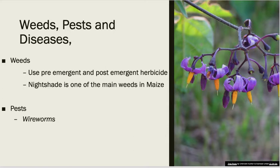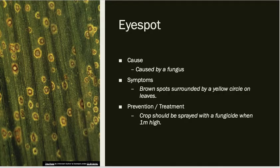For weeds, pests, and diseases — some of these we've already studied when looking at barley, oats, and wheat. The main weed is nightshade, as shown in the picture on the right. It can be prevented with a pre-emergent herbicide before the maize comes up, and another herbicide spray after emergence. The main pest is wireworms, which we've already studied in an earlier chapter. For fungal diseases, eye spot is the key one — you can see in the picture the small brown spots surrounded by a yellow patch, which get bigger and take over more of the leaf, affecting yield.